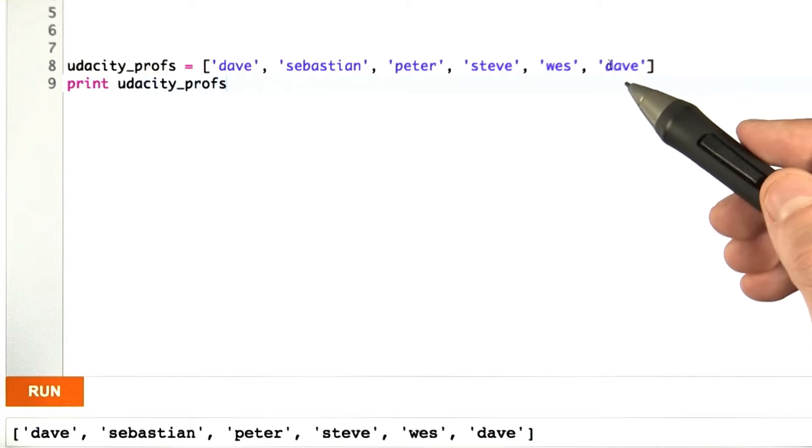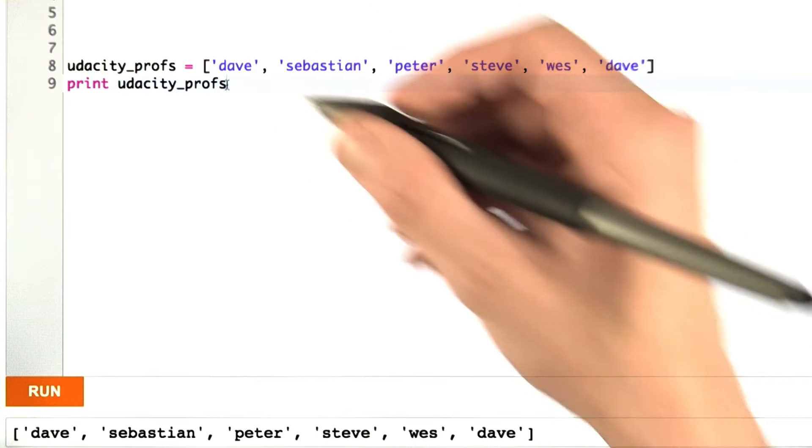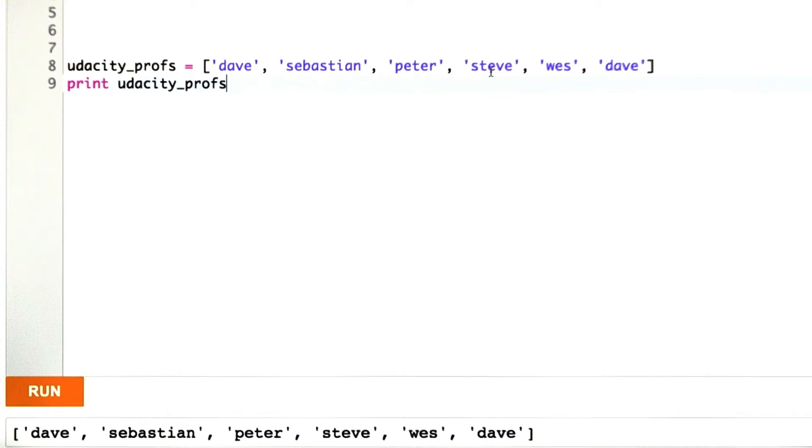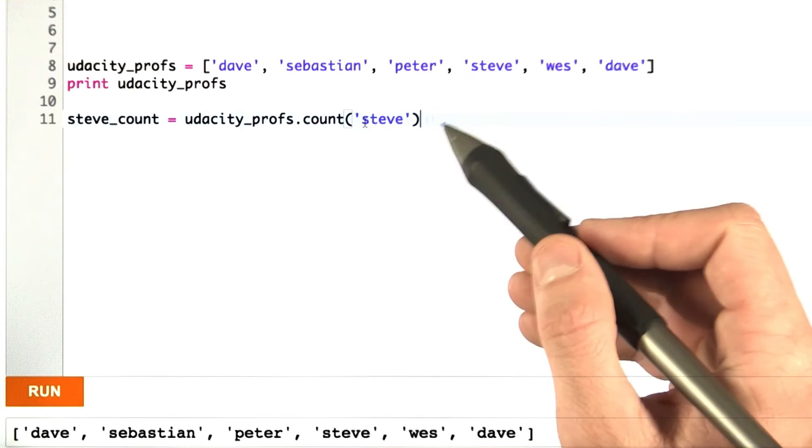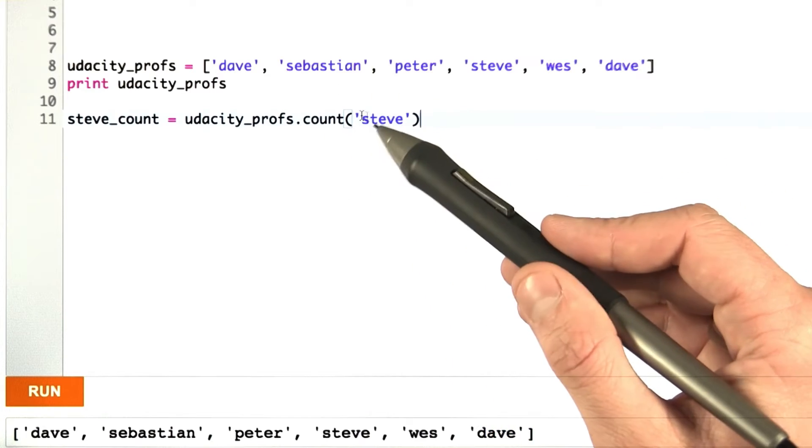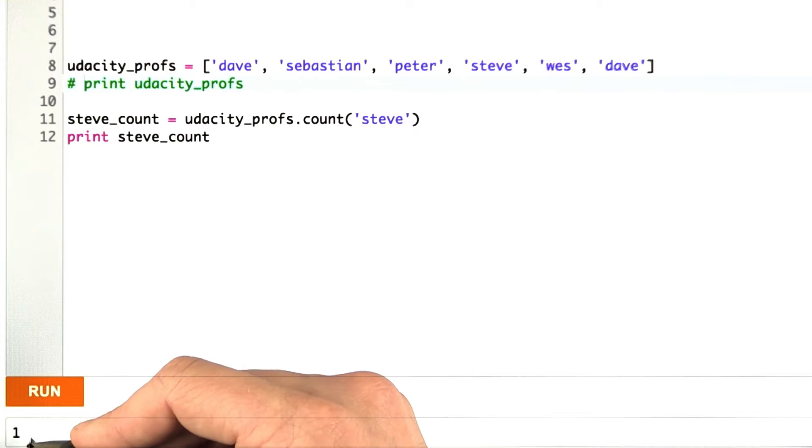Let's say we want to know how many times Steve's name shows up on this list. For this example, it's pretty easy to count ourselves, but let's have Python do it anyways. We'll define a variable called SteveCount and set it equal to the name of our list, .count, and I'm counting the occurrences of Steve. If I print SteveCount, I get 1, just as I'd expect.